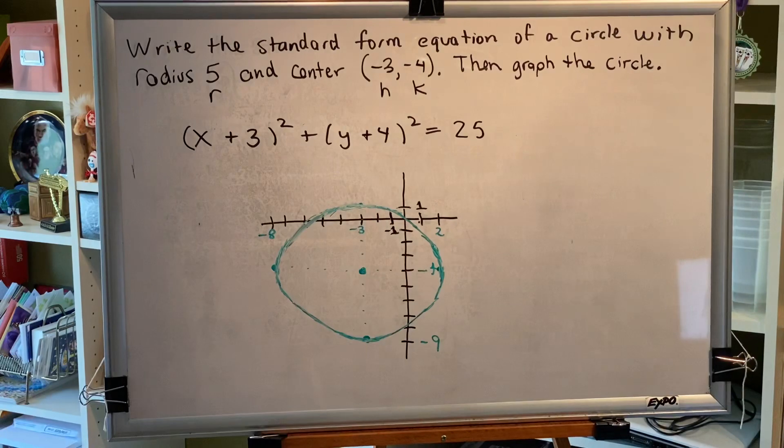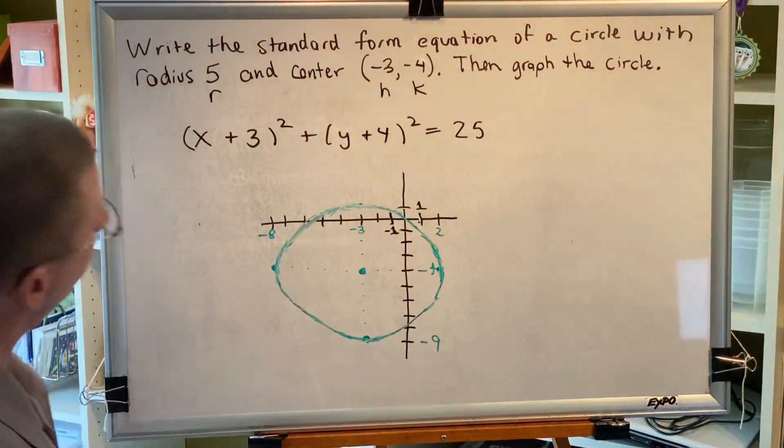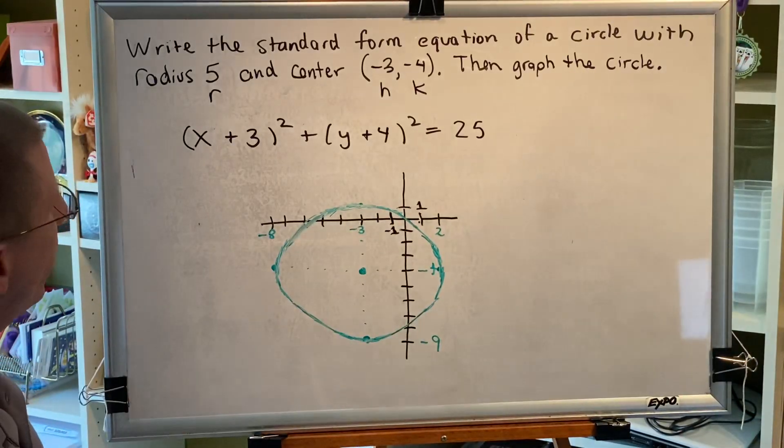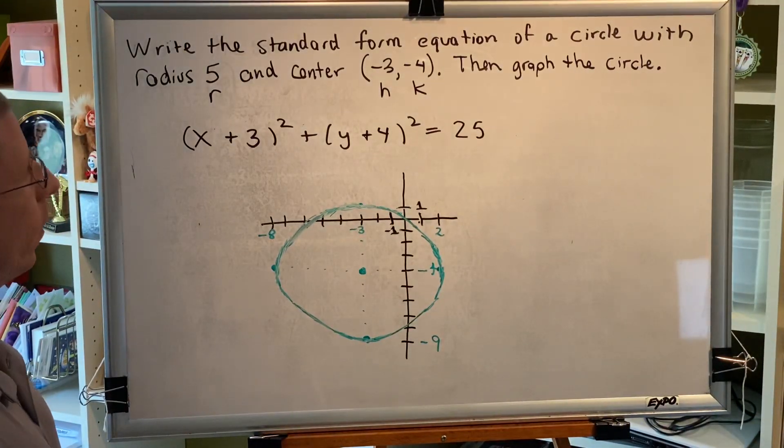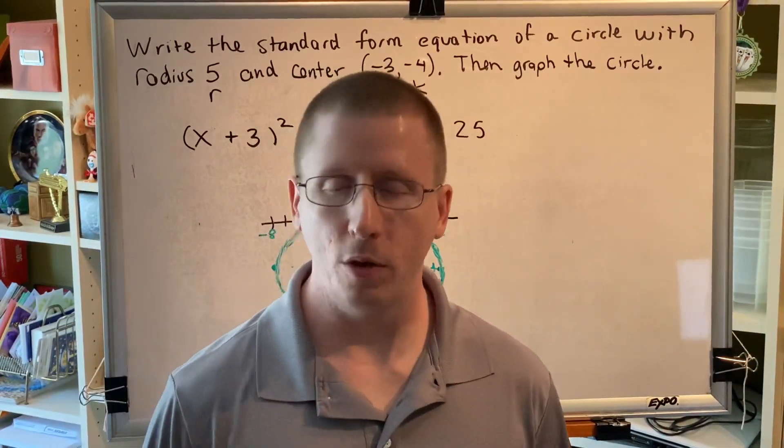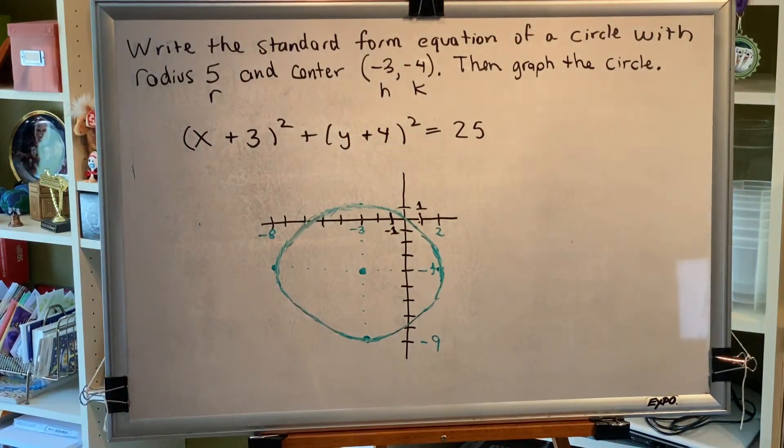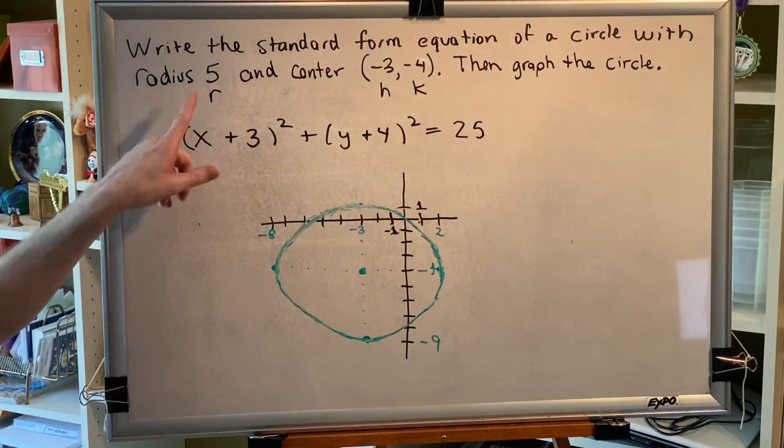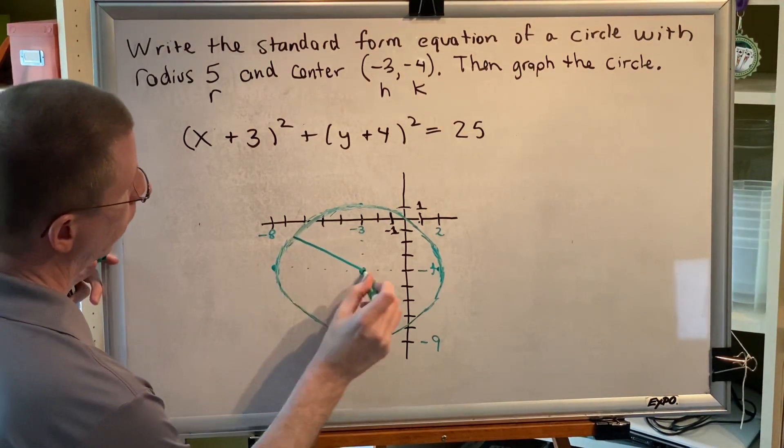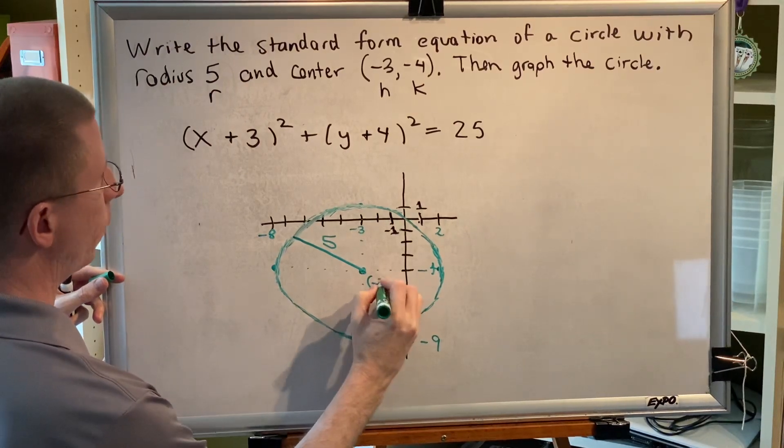Now, you might notice that the picture that I made looks a little bit more like an egg than it does a circle. And that's because the scale of my graph is a bit distorted. This is why it's so important to create an accurate graph scale. There's no such thing as a perfect graph, but we do the best we can. So here is the equation of the standard form of a circle with radius five and center at coordinates (-3, -4).